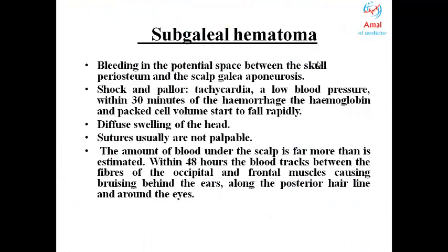The third type of extracranial hemorrhage is the subgaleal hematoma or subgaleal hemorrhage. This hemorrhage occurs in the potential space between the skull periosteum and the galea aponeurotica. It usually happens because pressure is applied to the infant's head at delivery, most commonly when vacuum extraction is used. There is rupture of the emissary vein, leading to accumulation of blood under the aponeurosis.